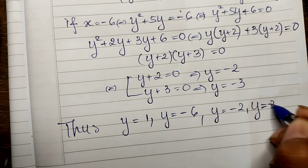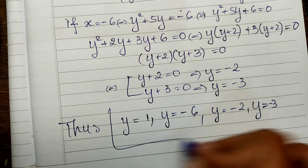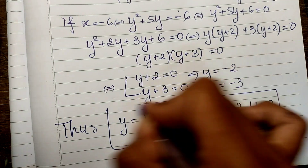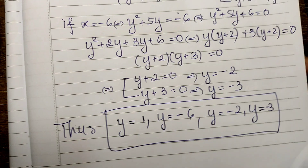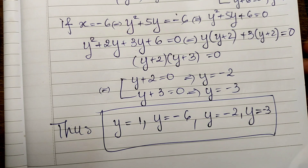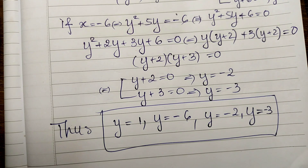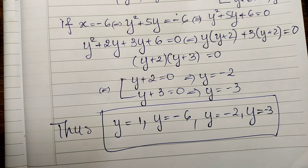So the complete set of solutions is y equals 1, y equals minus 6, y equals minus 2, and y equals minus 3. Thank you for watching. If you like my video, please don't forget to subscribe to my channel for more exciting videos. Goodbye!